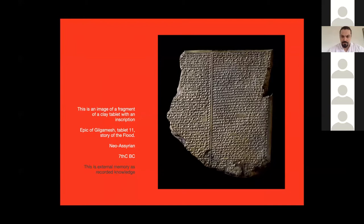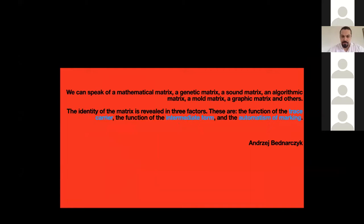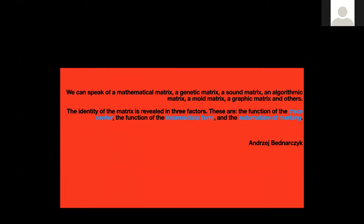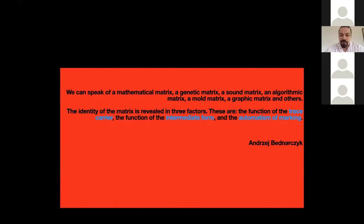Matrix. What is a matrix? We can speak of a mathematical matrix, a genetic matrix, a sound matrix, an algorithmic matrix, a mold matrix, a graphic matrix, and others. The identity of the matrix is revealed in three factors: the function of the trace carrier, the function of the intermediate form, and the automatism of marking.